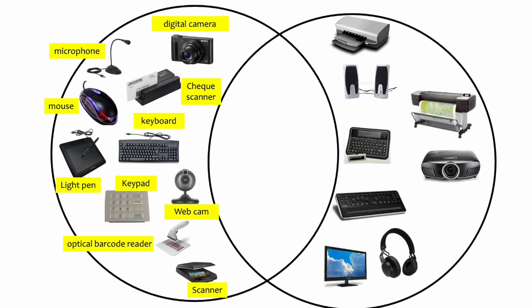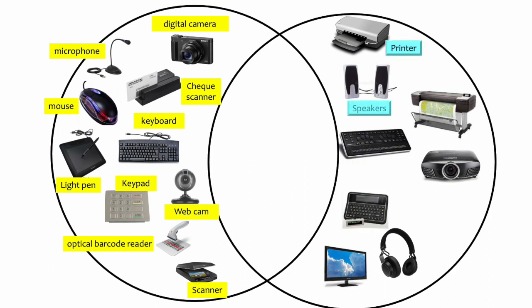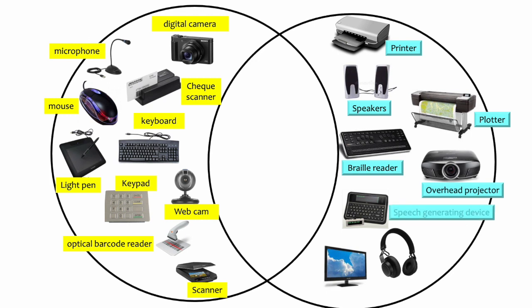Let us now identify the output devices: a printer, speakers, a plotter, a braille reader, an overhead projector, a speech generating device, headphones and earphones, and a monitor, which is also known as a screen.